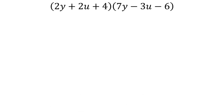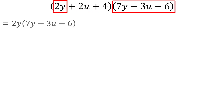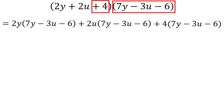Let's do one more problem. We have two trinomials multiplied together: 2y plus 2u plus 4 times 7y minus 3u minus 6. We need to multiply every possible combination of terms from the first and second trinomial. The easiest way is to split the problem into three separate multiplications: 2y multiplied by the second trinomial, plus 2u multiplied by the second trinomial, plus 4 times the second trinomial.